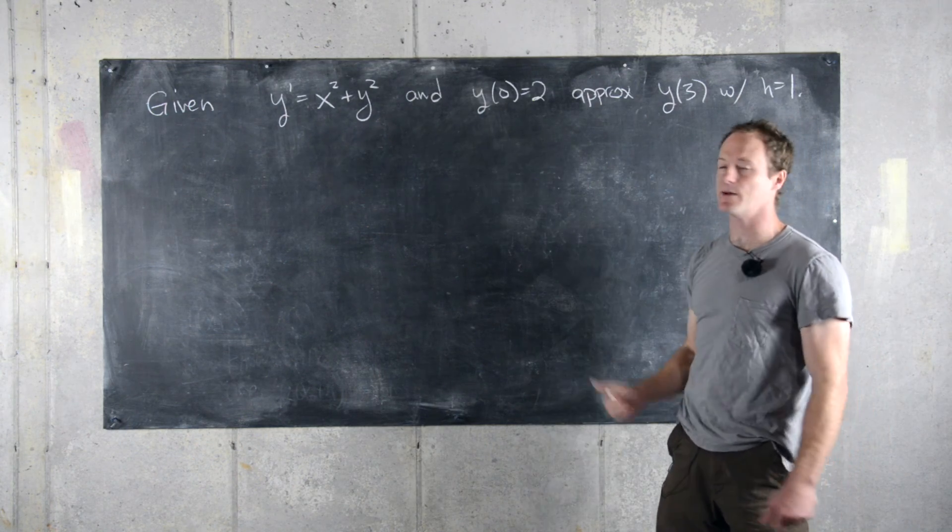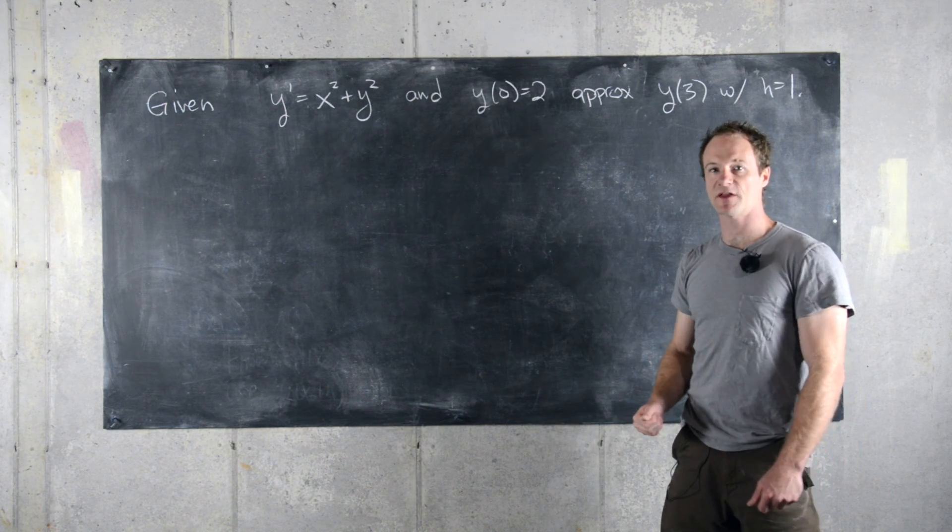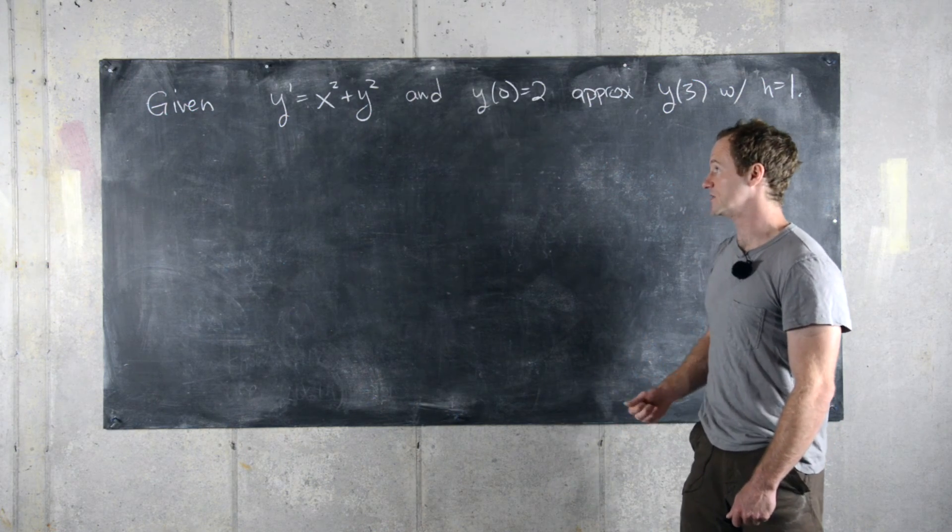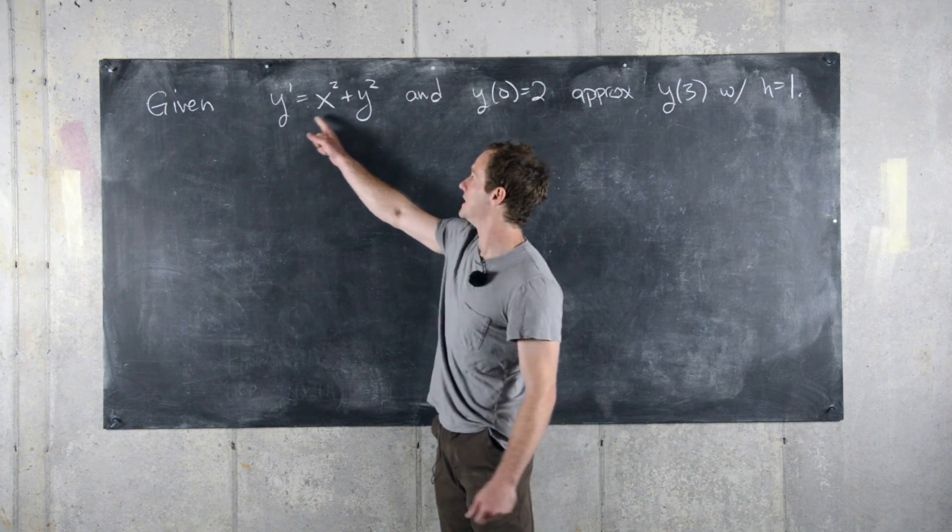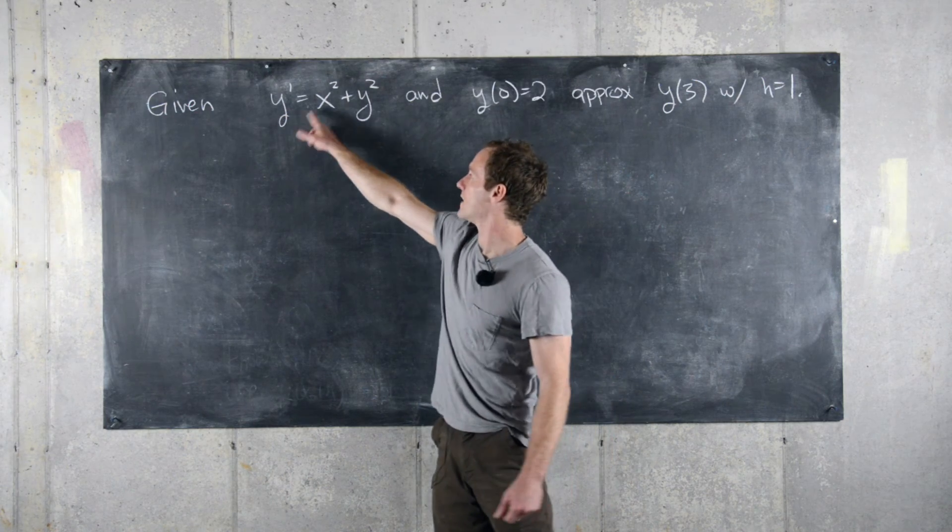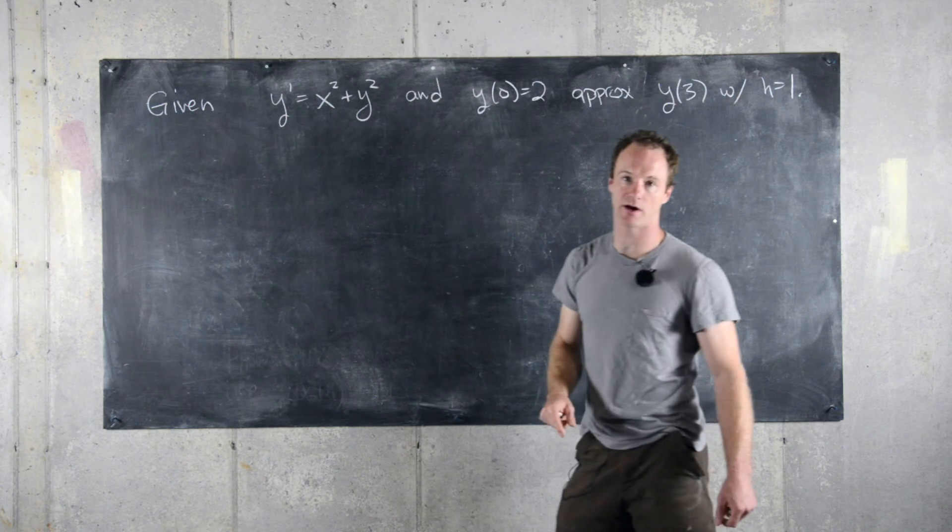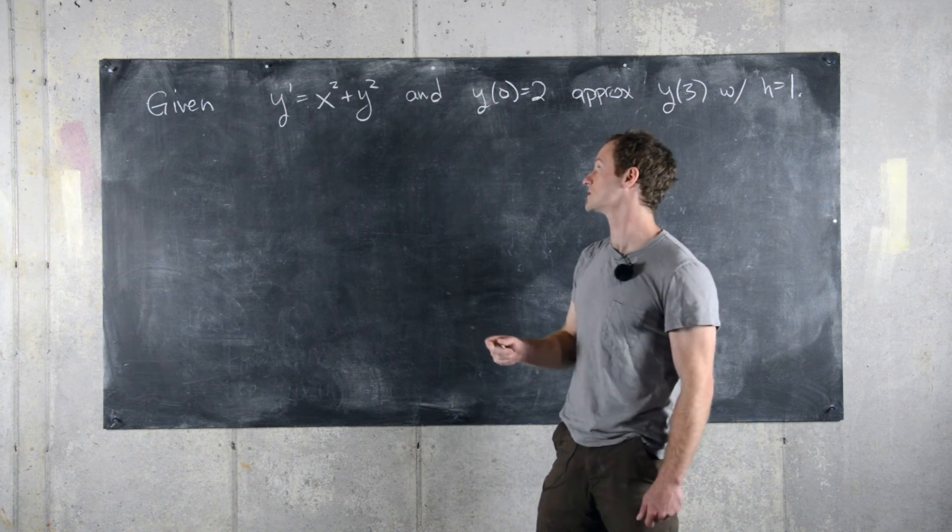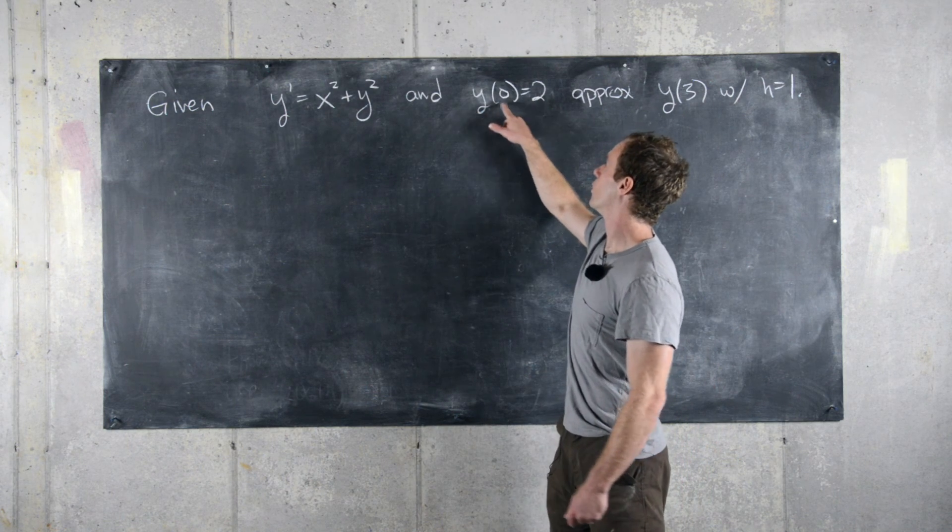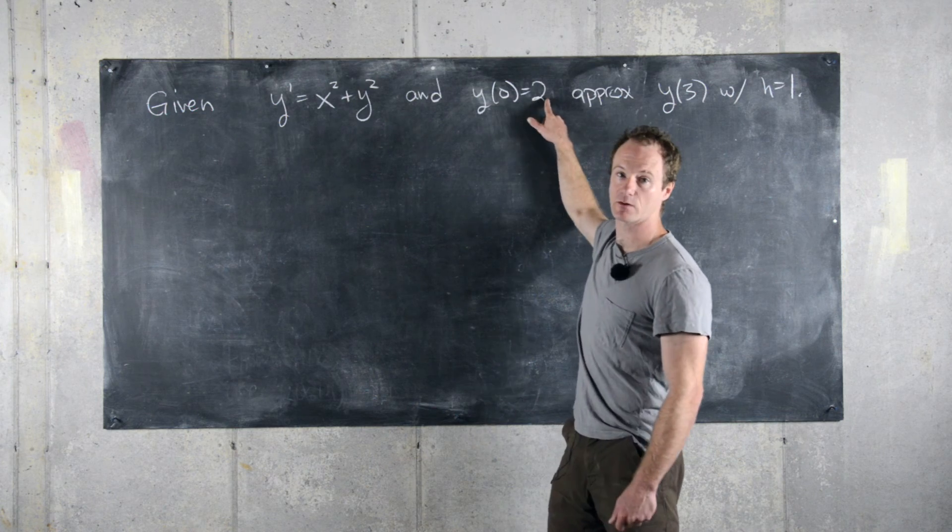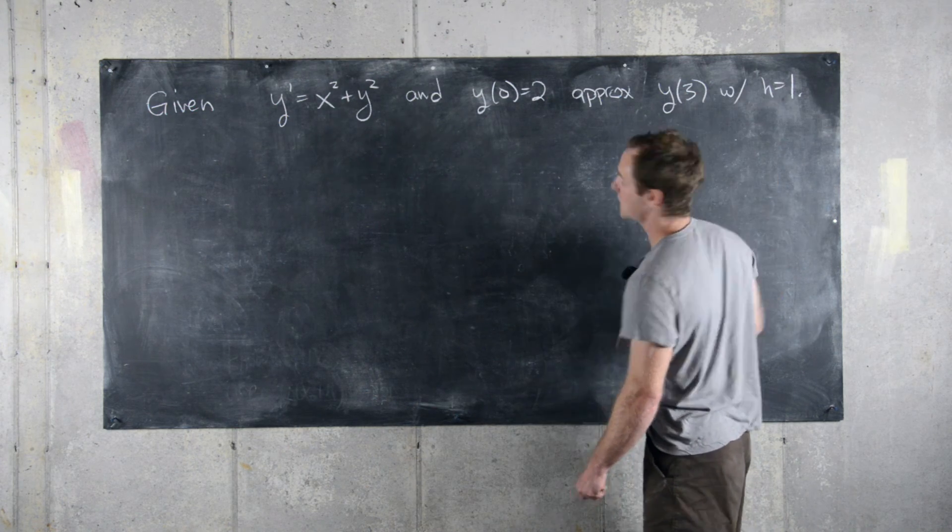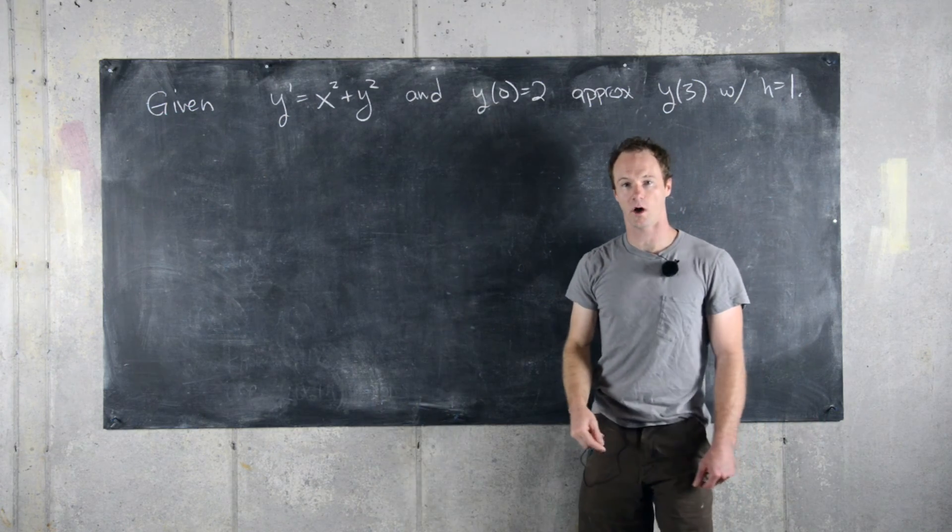We're going to look at this example that uses Euler's method for approximating solutions to first-order differential equations. We have our initial value problem: y prime equals x squared plus y squared. This is a non-linear differential equation, so in general these are very difficult to solve. And we have y evaluated at zero equals two, and we want to approximate y of three with a step size of one.